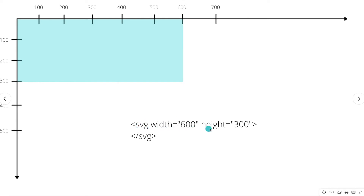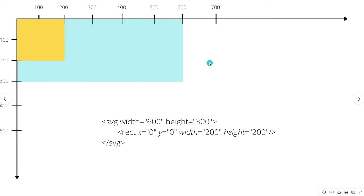You define the SVG viewport by using the width and height of the SVG tag. Here we define an SVG viewport of 600 by 300 pixels, colored blue on a Cartesian plane — 600 pixels wide and 300 pixels down. This blue rectangle represents our viewport, and by default the viewport starts at the top left corner, stretching 600 pixels wide and 300 pixels down.